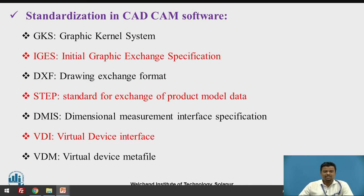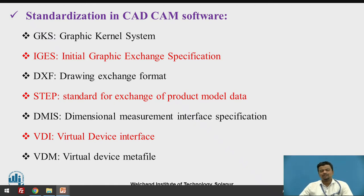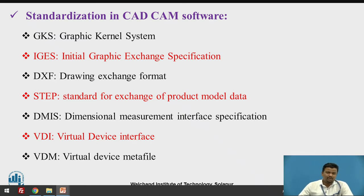Standardization is always needed in the field of CAD/CAM software, and there are different Data Exchange Format files used for this purpose. For example, there are different types: GKS, which is a basic file; IGES, which is Initial Graphic Exchange Specification; DXF, which is Drawing Exchange Format; STEP; and DMIS, which deals with devices like VDI or VDM — that is Virtual Device Interface or Virtual Device Metafile.